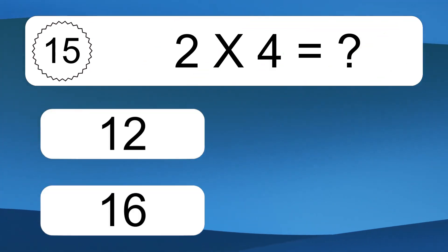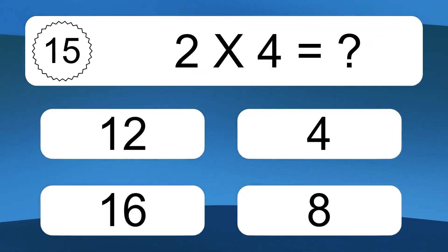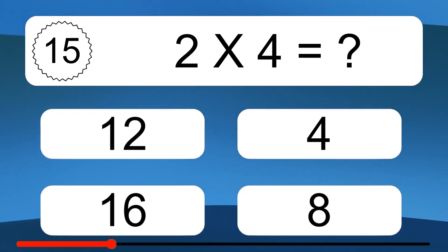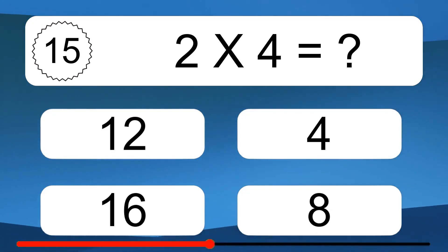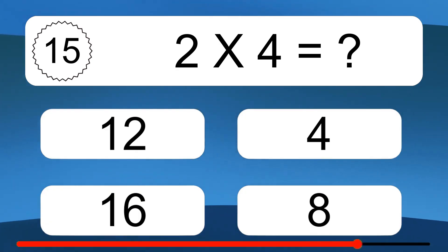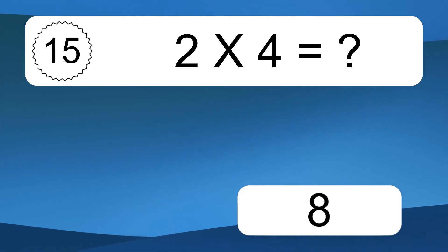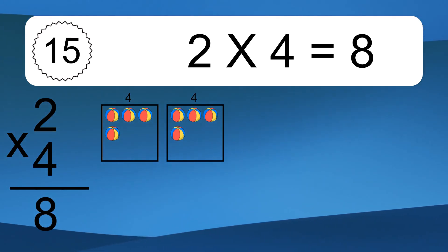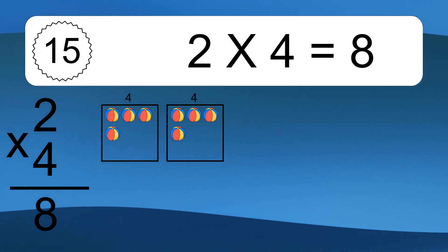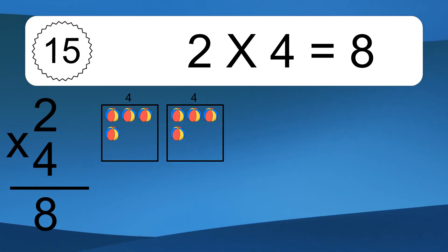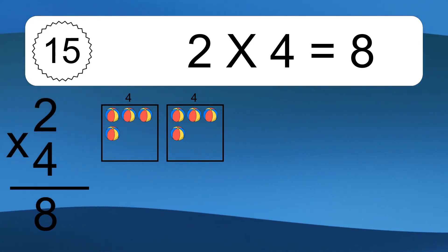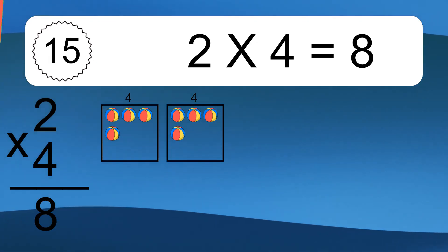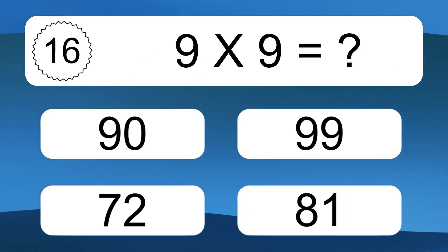2 times 4 equals what? We have 2 boxes, and each box has 4 colorful balls inside. If you count all the balls in all the boxes together, you will have 2 times 4 balls. This equals 8 balls.